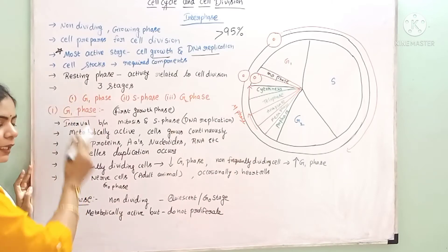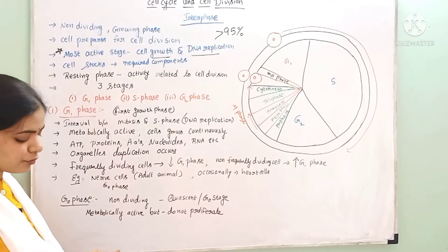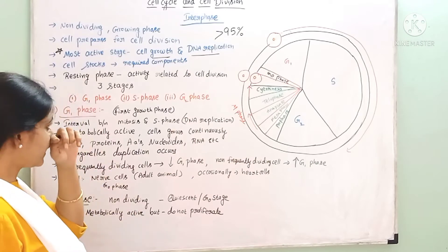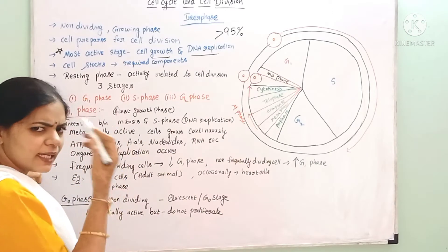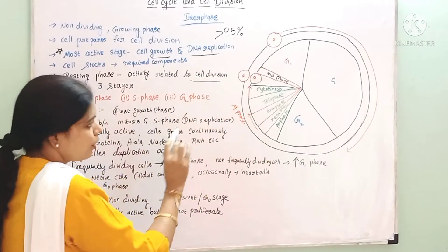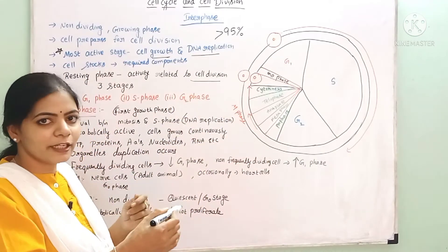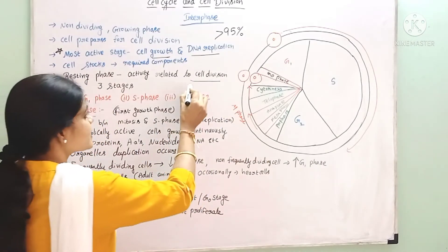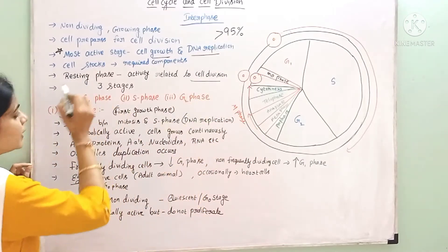Interphase is also called a resting phase. What is a resting phase? It is called resting because cell division is not going to happen here — the cell is not dividing during this phase.